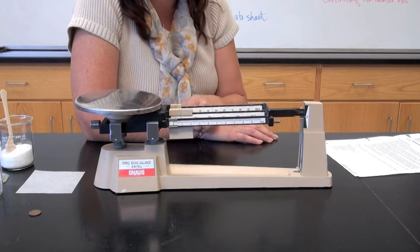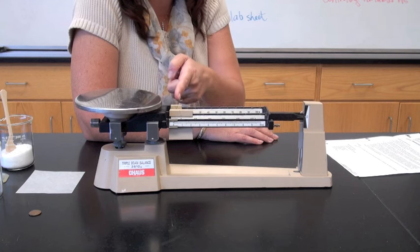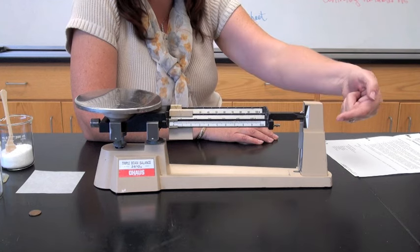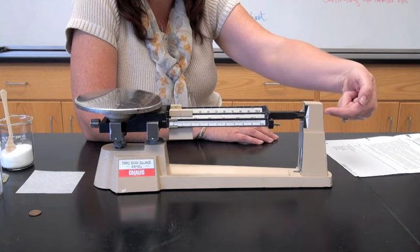When you start to use your triple beam balance you always want to make sure that all of the riders are pointing to zero, and that the zero marker is also resting at zero.